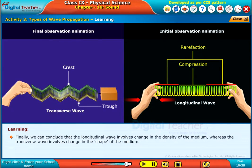Finally, we can conclude that the longitudinal wave involves change in the density of the medium, whereas the transverse wave involves change in the shape of the medium.